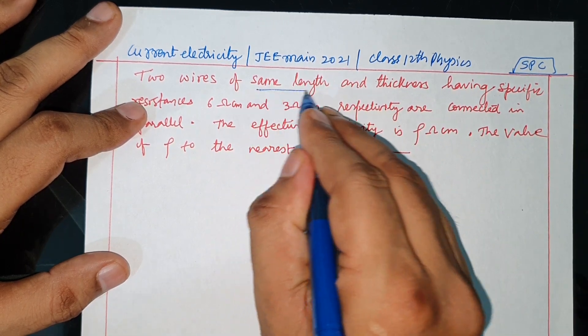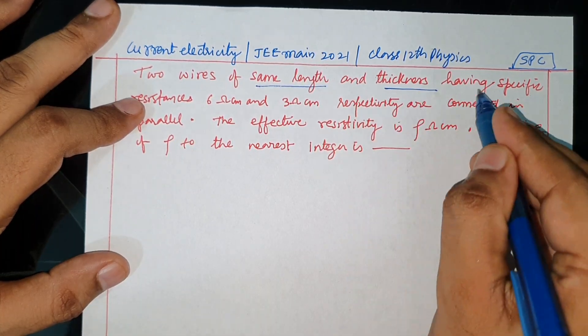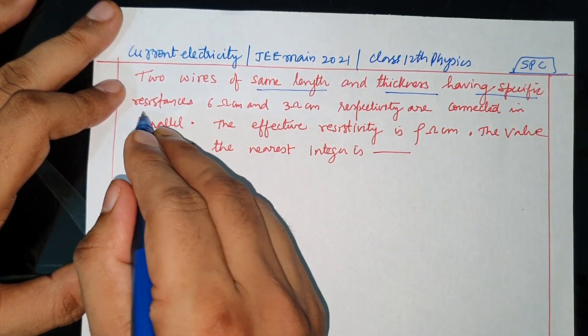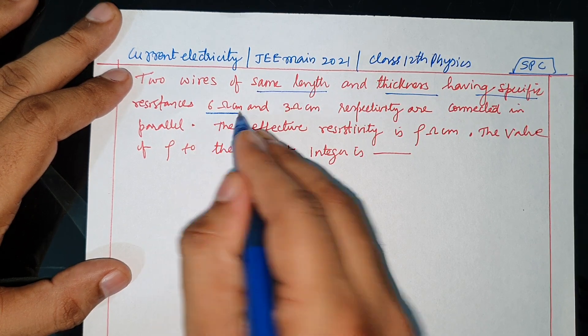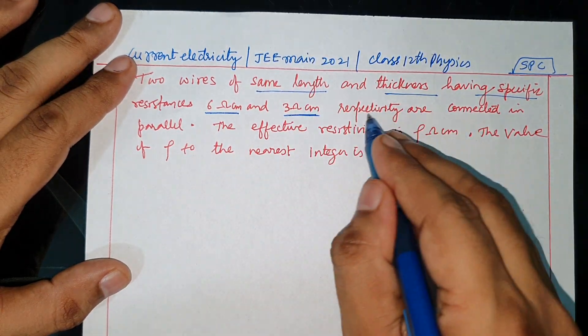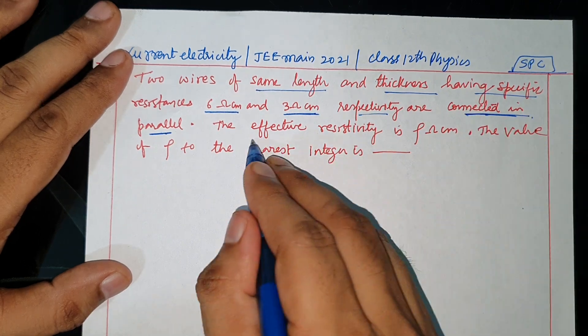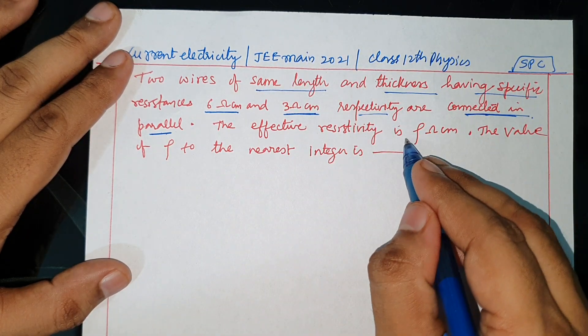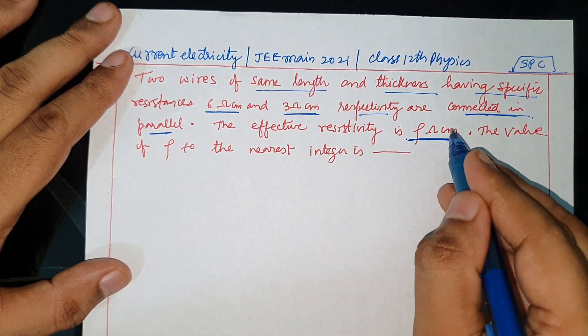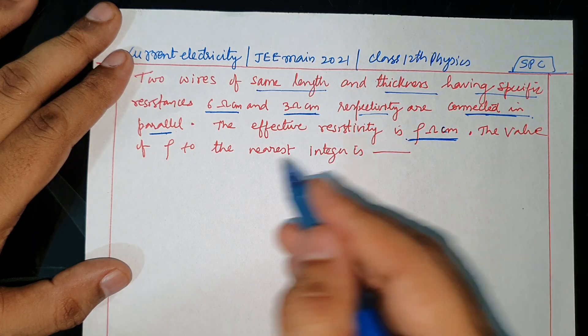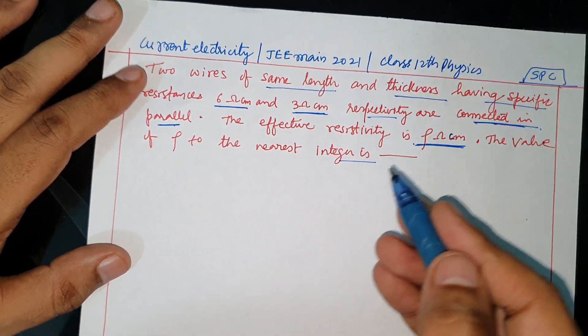Two wires same length and thickness having specific resistance 6 ohm centimeter and 3 ohm centimeter respectively are connected in parallel. The effective resistivity is rho ohm into centimeter. The value of rho to the nearest integer is: